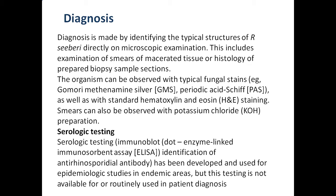Diagnosis is made by identifying the typical structures of Rhinosporidium seeberi directly on microscopic examination. This includes examination of smears of macerated tissue or histology of prepared biopsy sample sections. The organism can be observed with typical fungal stains, namely Gomori methenamine silver, periodic acid-Schiff, as well as standard hematoxylin and eosin stain. Smears can also be observed with potassium hydroxide preparation.